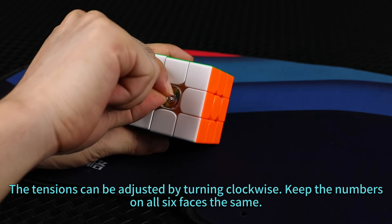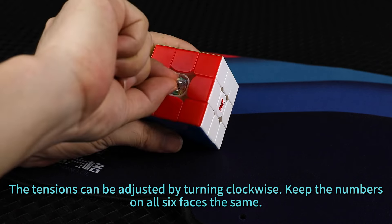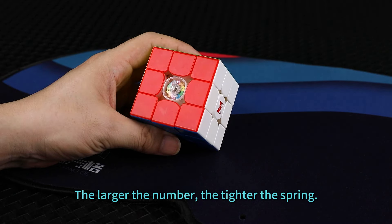Step 3. The tensions can be adjusted by turning clockwise. Keep the numbers on all six pieces the same. The larger the number, the tighter the spring.